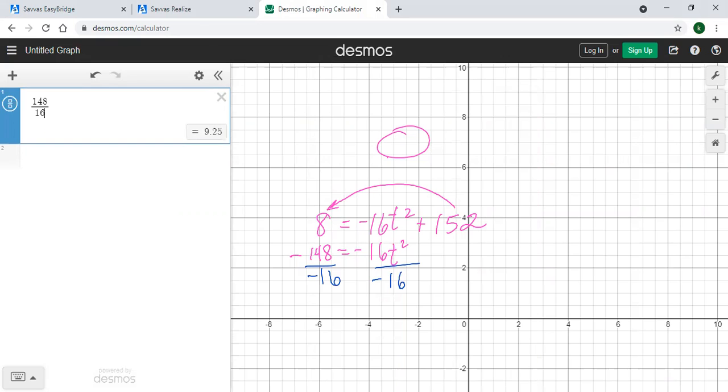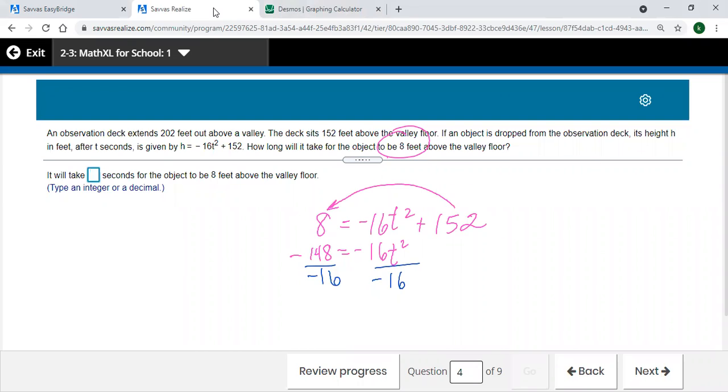148 divided by 16 is 9.25, so 9.25... and it would be positive. Let's see, 148... oh that's not the right number. If I added 8 onto 148, I don't get 152. This is 144 divided by 16.